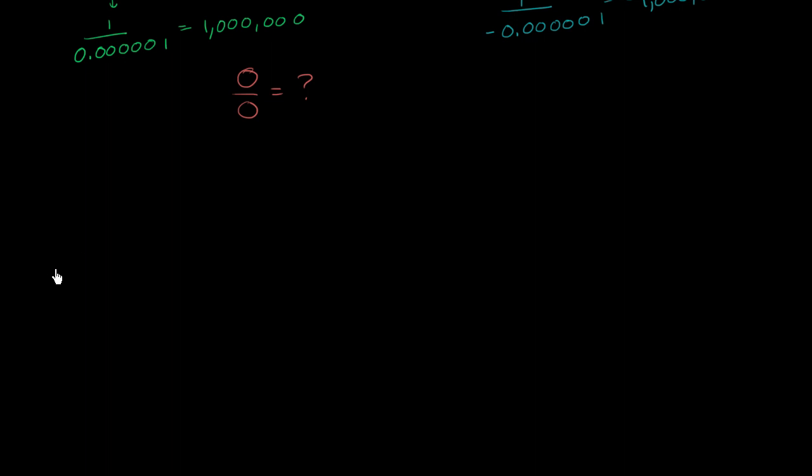Well, there's a couple of lines of reasoning here. One, you could start taking numbers closer and closer to 0 and dividing them by themselves. So for example, you take 0.1 divided by 0.1. Well, that's going to be 1.